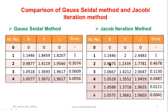In contrast, in Jacobi iteration method, to calculate x we used y = 0 and z = 0; to calculate y we used x = 0 and z = 0; and to calculate z we used x = 0 and y = 0 — always using previous iteration values. In Gauss-Seidel we always use the latest updated values. As a result, Gauss-Seidel reached two decimal place accuracy in four iterations, whereas Jacobi required six iterations. So Gauss-Seidel is faster than Jacobi.